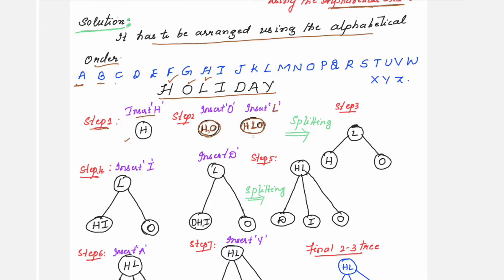At this point, if you see, there are three elements in the node which are not allowed. Hence, you carry out the splitting. Once you carry out the splitting, what will you do? H, L, O were the three alphabets, so this L will be promoted. You will place here L and then comes the children nodes H and O. This is happening in step 3.